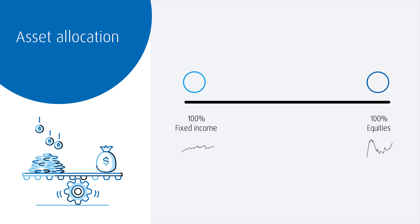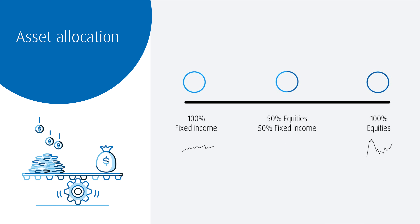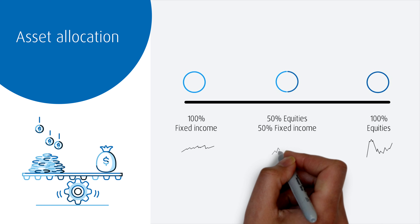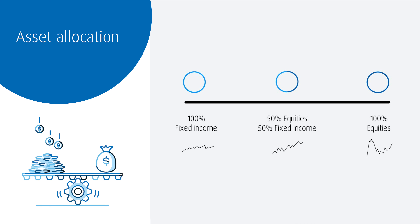Either of these two scenarios might be too extreme. One might be too risky, and one might not have enough return potential. But if we consider a portfolio that has an asset allocation of 50% stocks and 50% bonds, it might have a risk and return profile that is in between these two extremes.